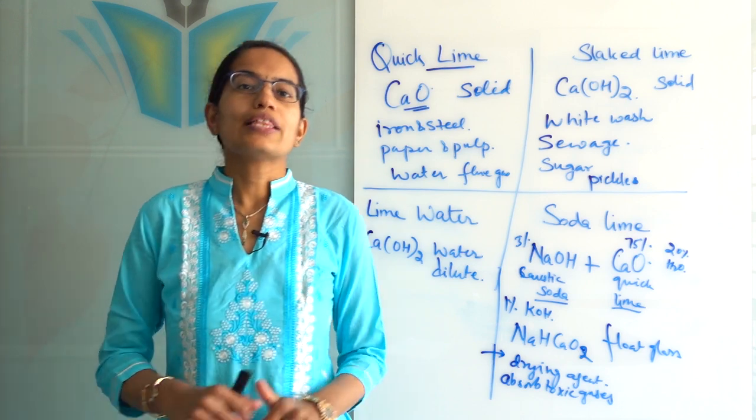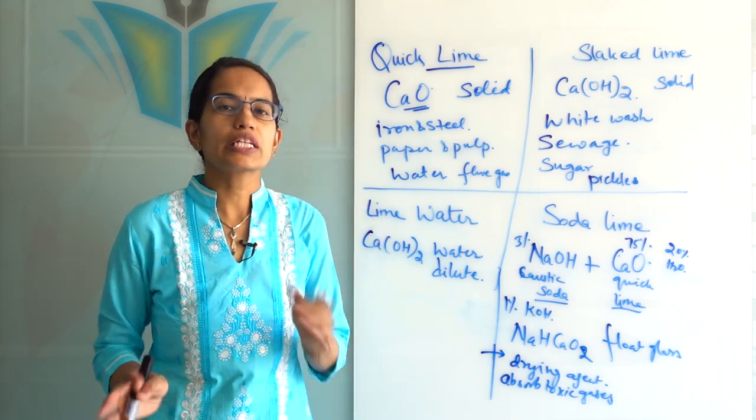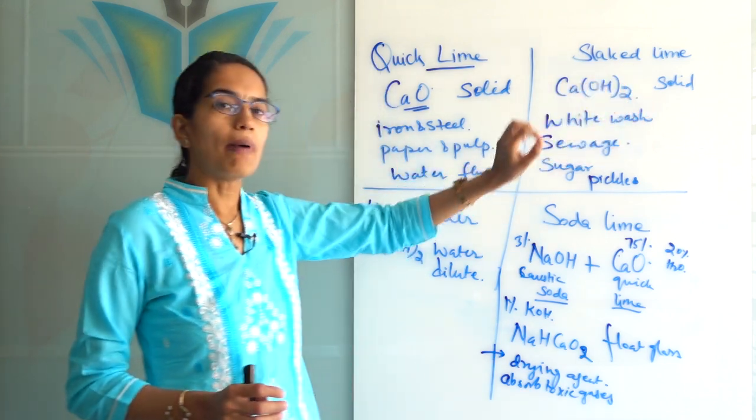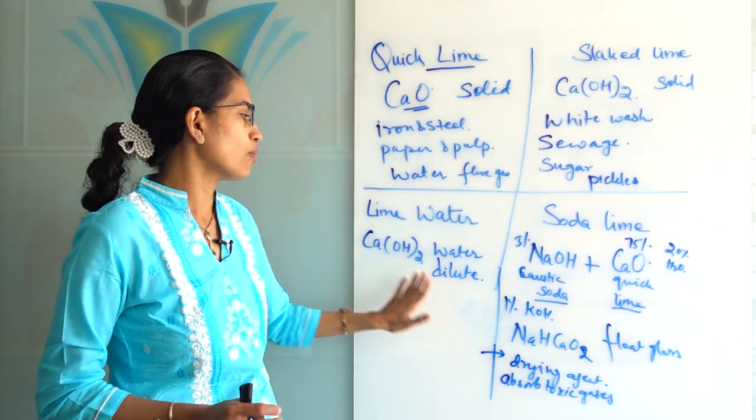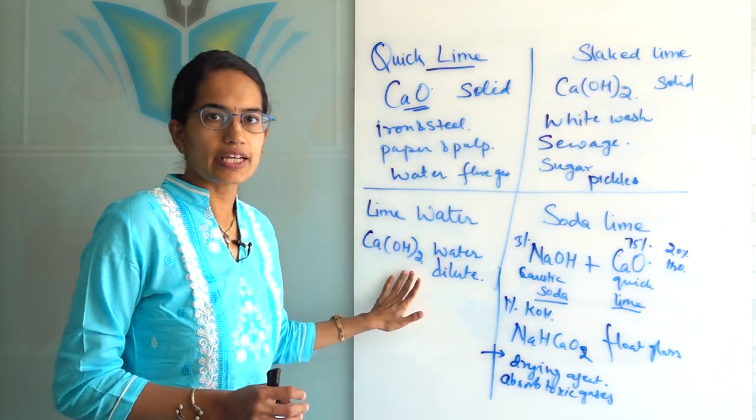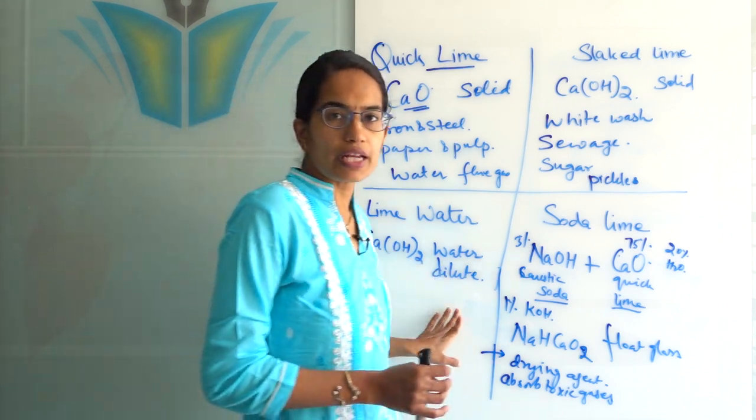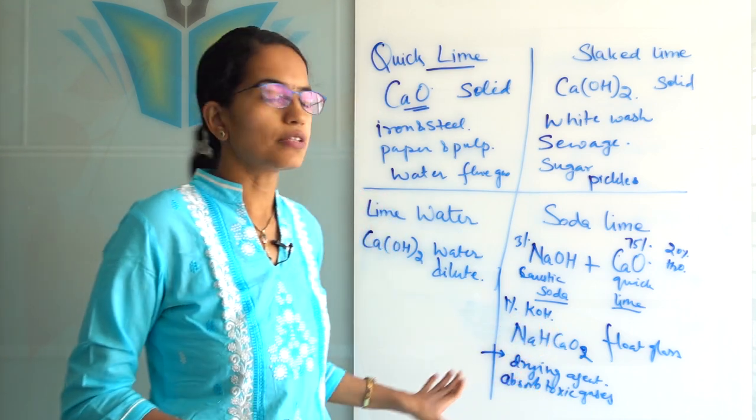The next important one is lime water. Lime water is nothing but slaked lime only but in diluted form. So it's calcium hydroxide again, calcium oxide plus water. But this is extremely diluted, nearly 70% diluted form.